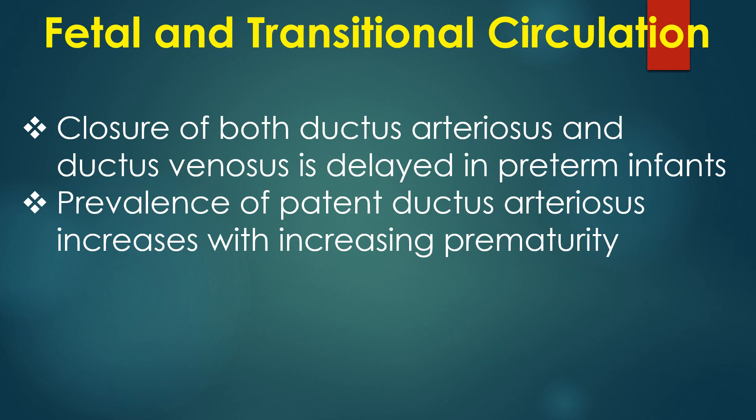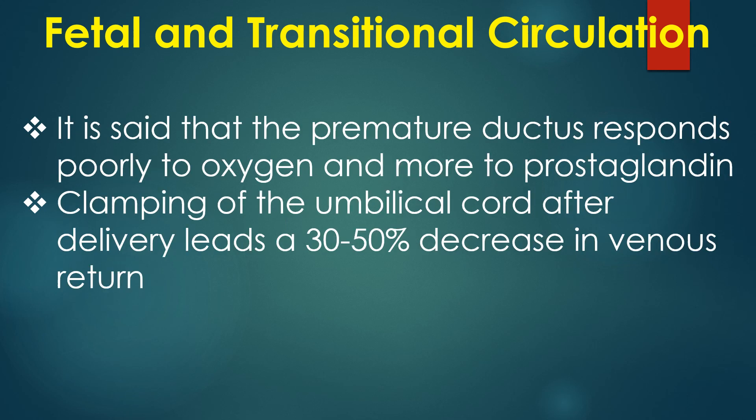The prevalence of patent ductus arteriosus increases with increasing prematurity. The premature ductus responds poorly to oxygen and more to prostaglandin. Clamping of the umbilical cord after delivery leads to a 30 to 50 percent decrease in venous return.